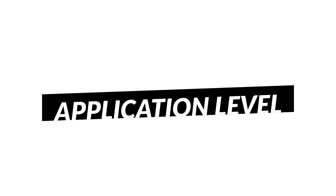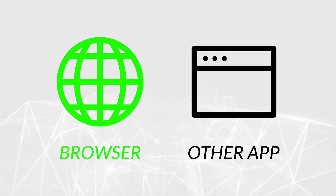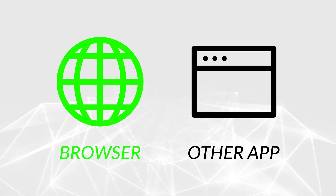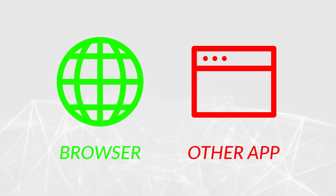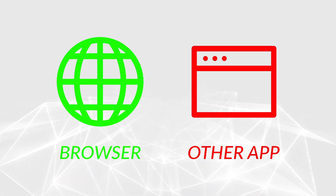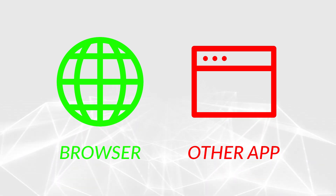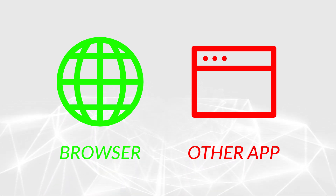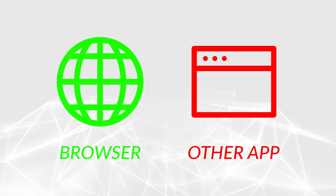One thing that you need to understand is that proxy servers work at the application level. For example, you can connect to a proxy server address through your browser, which protects you while browsing. However, that same proxy server won't cover your tracks in other applications unless they are also connected to it. That gives you more granular control over the way you access the web, but it also makes it harder to achieve full privacy.